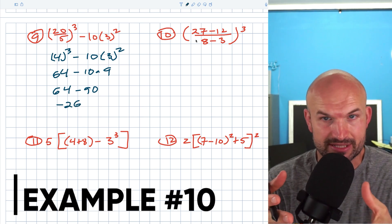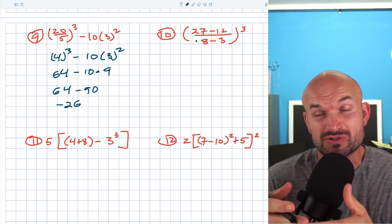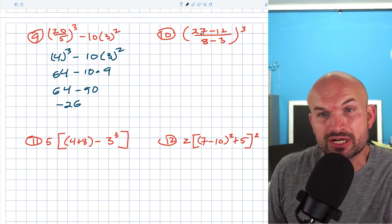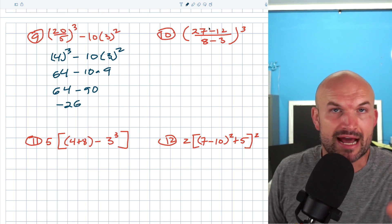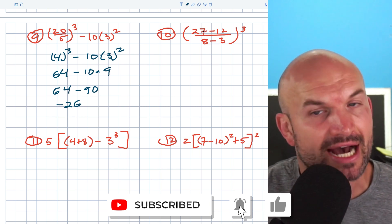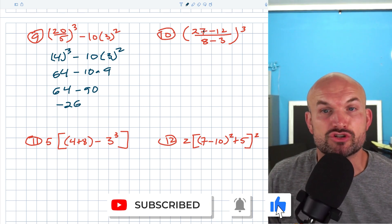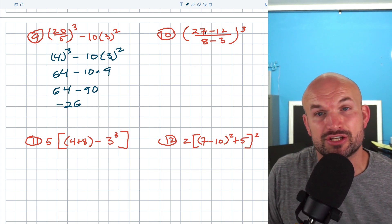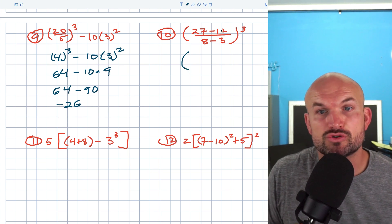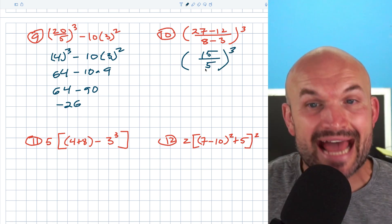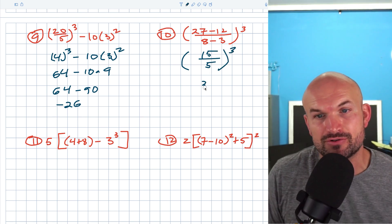In this example, we have a fraction inside a parenthesis. PEMDAS doesn't explicitly tell us this, but we need to treat the numerator and denominator separately when simplifying a rational expression. So I simplify the numerator and denominator first: 27 minus 12 is 15, and 8 minus 3 is 5. Now 15 divided by 5 is 3, and 3 cubed is 27.